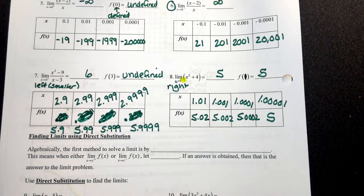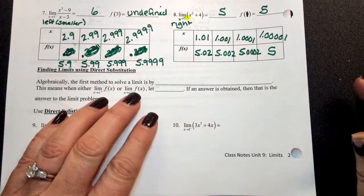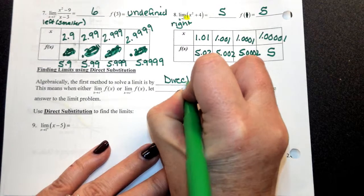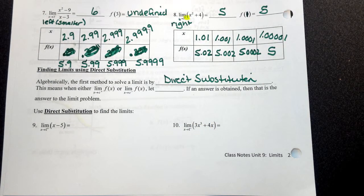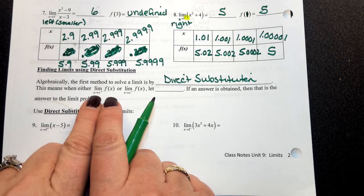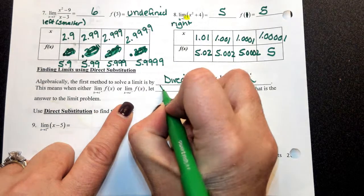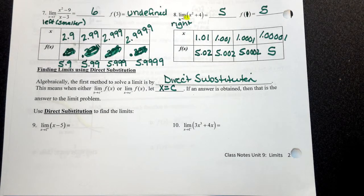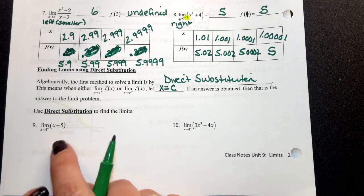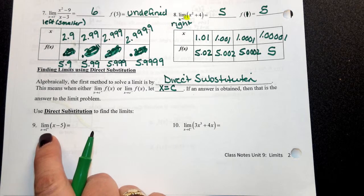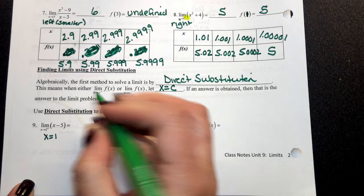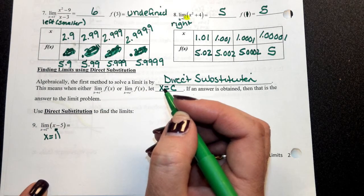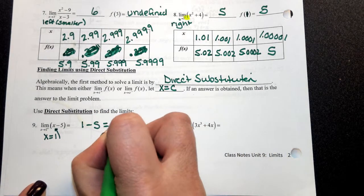One way to find limits without filling out a table is direct substitution — the first algebraic method. Whether you're coming from the right or left, simply plug that x value into the equation. If x approaches 1, plug in 1. For example, the limit as x approaches 1 from the right of (x minus 5): plug in 1, get 1 minus 5 equals negative 4. You're done.